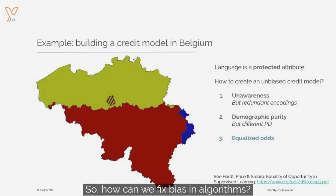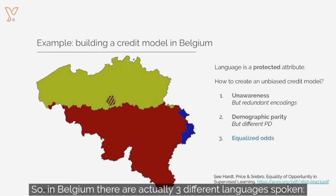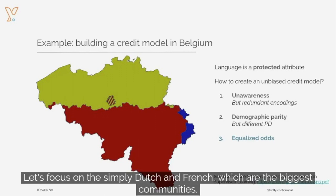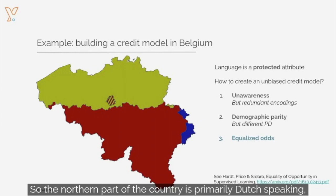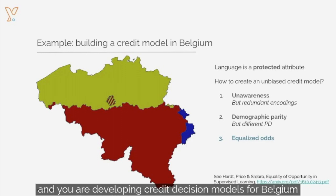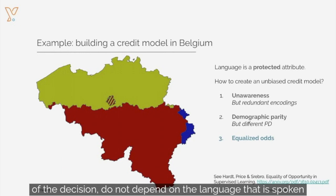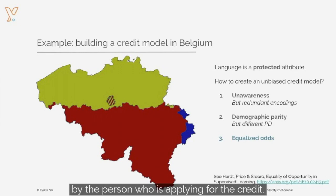So how can we fix bias in algorithms? Let me give you one concrete example from my own home country, Belgium. In Belgium, there are actually three different languages spoken: Dutch, French, and German. Let's focus on simply Dutch and French, which are the biggest communities. The northern part of the country is primarily Dutch speaking, while the southern part is French. So when you are a bank developing credit decision models for Belgium, you should make sure that the results of the decision do not depend on the language spoken by the person who is applying for the credit.